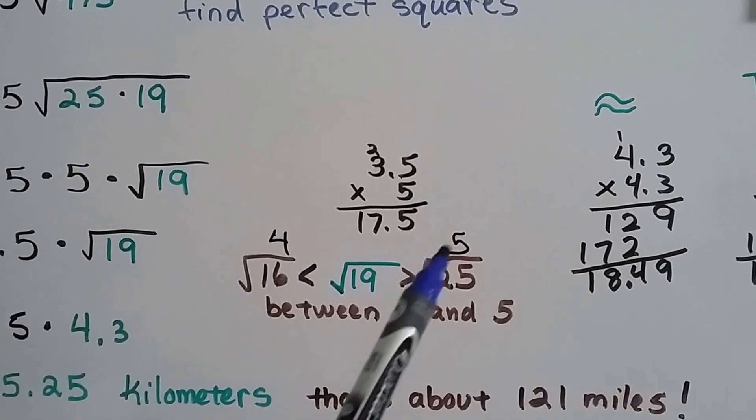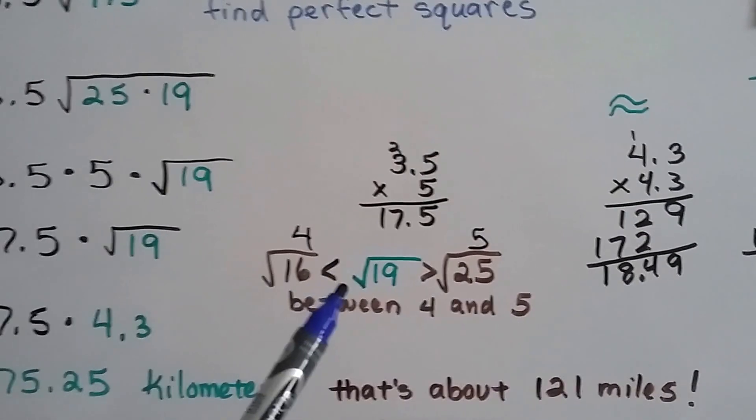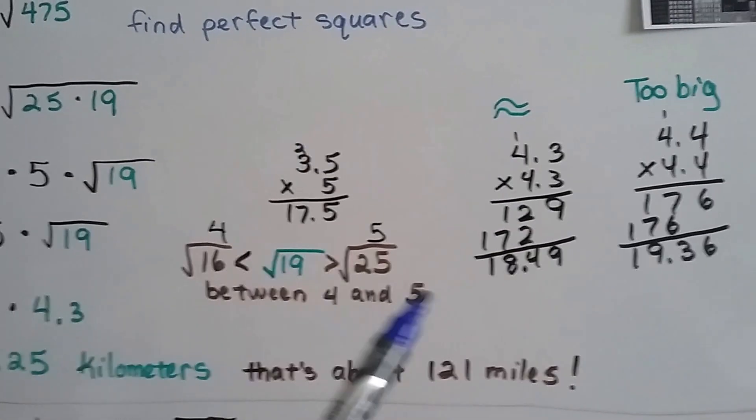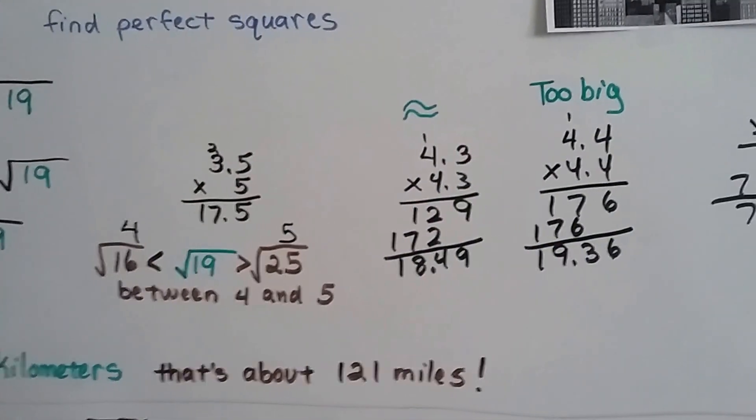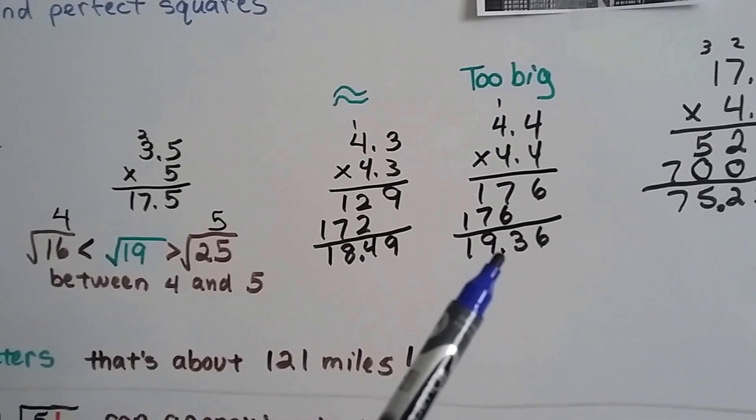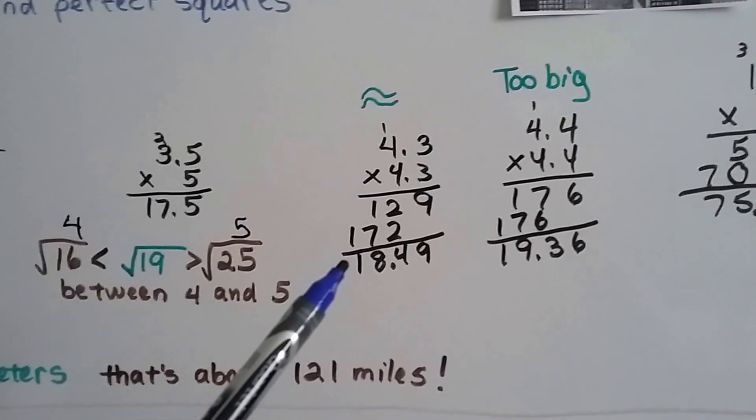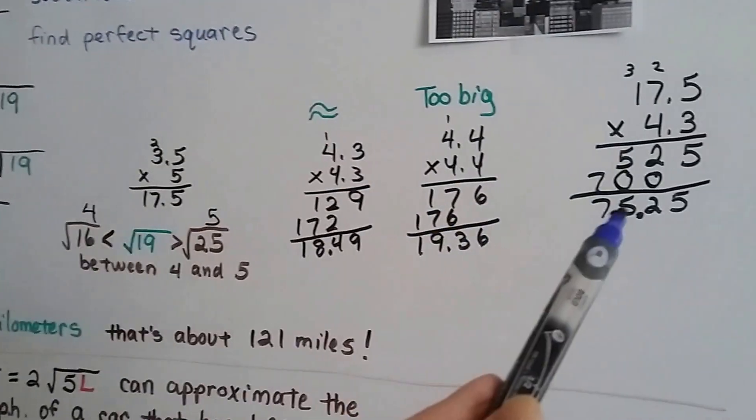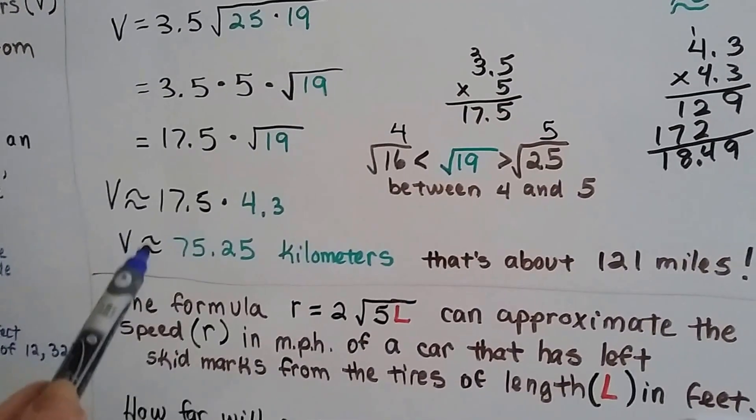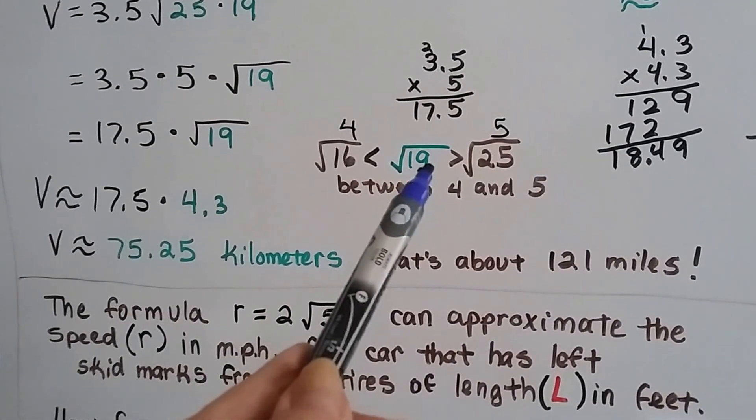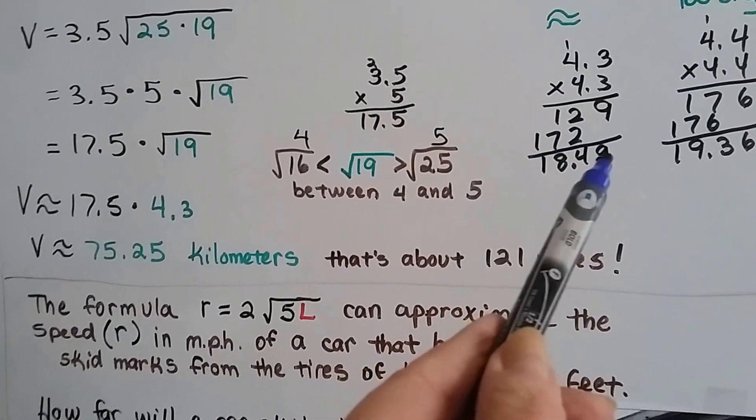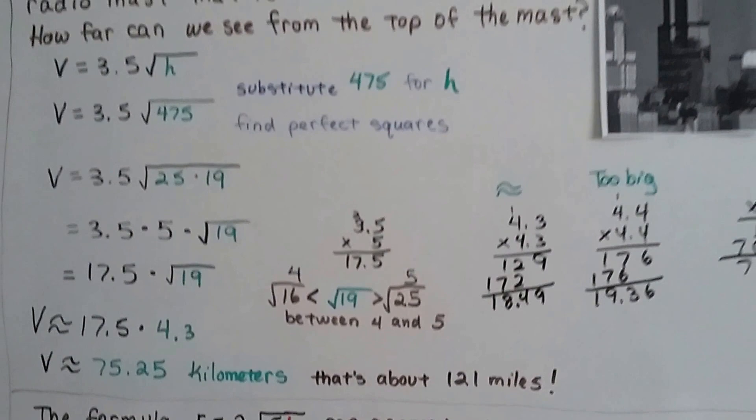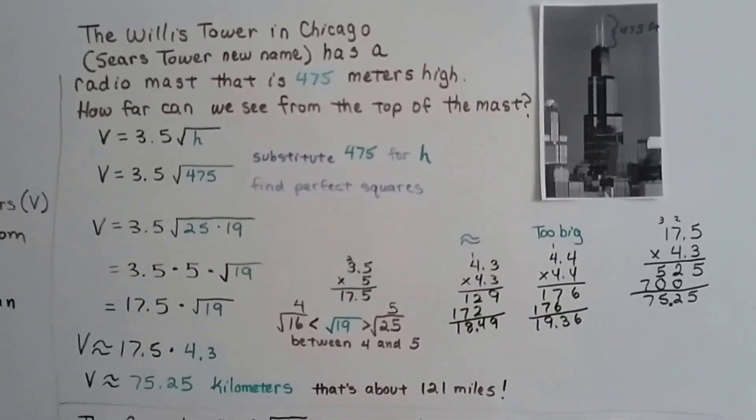I know it's in between the square root of 16 and the square root of 25, so it's in between a 4 and a 5. It's a decimal in between a 4 and a 5, but where? It's closer to the 4 than it is to the 5. 16 and 19 are closer together than 19 and 25. I tried 4.3 and I tried 4.4. This was a little too small, this was a little too big. I figured, what the heck, I'll just go with the 4.3. When I multiplied it to the 17.5, I got 75.25 as an approximation. Because it's not exactly 19, it was 18.49. It's only an approximation of the kilometers. It's about 121 miles that you should be able to see from on top of that radio antenna.